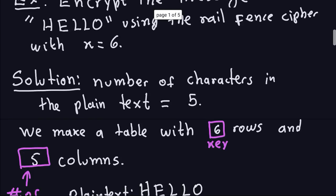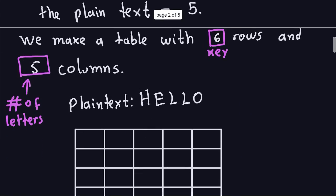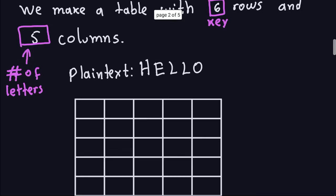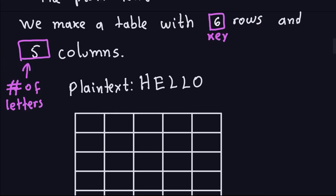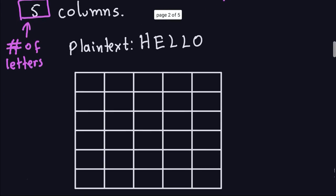Because we are using the zigzag cipher we always make a table and the table should have some rows and the number of rows is equal to the key. So the key here is 6, so we are going to have 6 rows and the number of columns is going to be equal to the number of symbols in my plaintext, which in this case is 5.